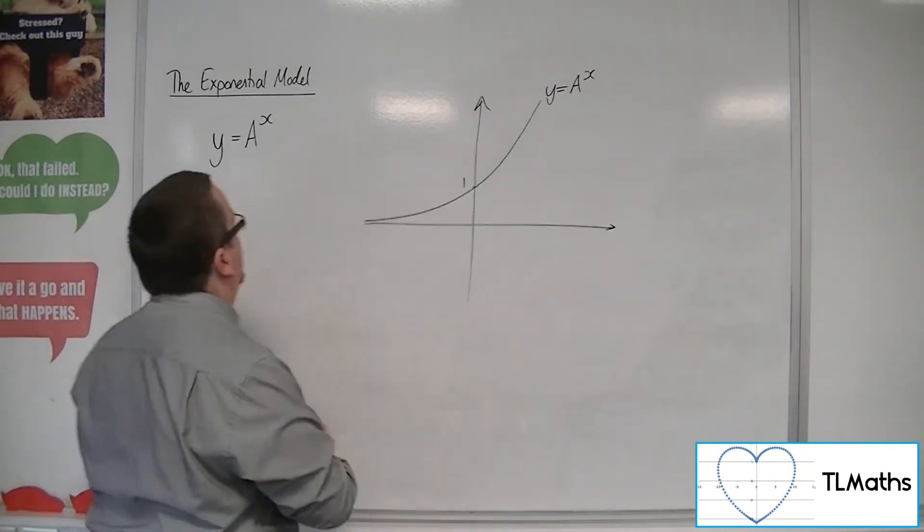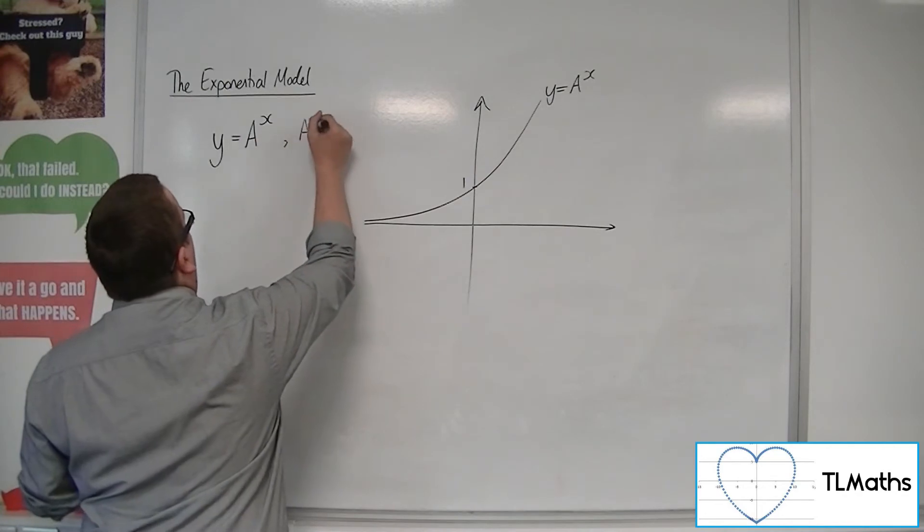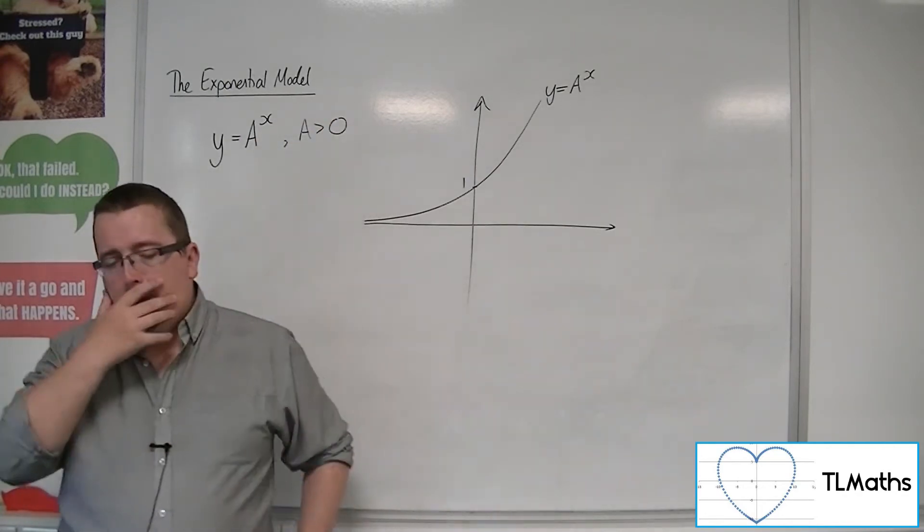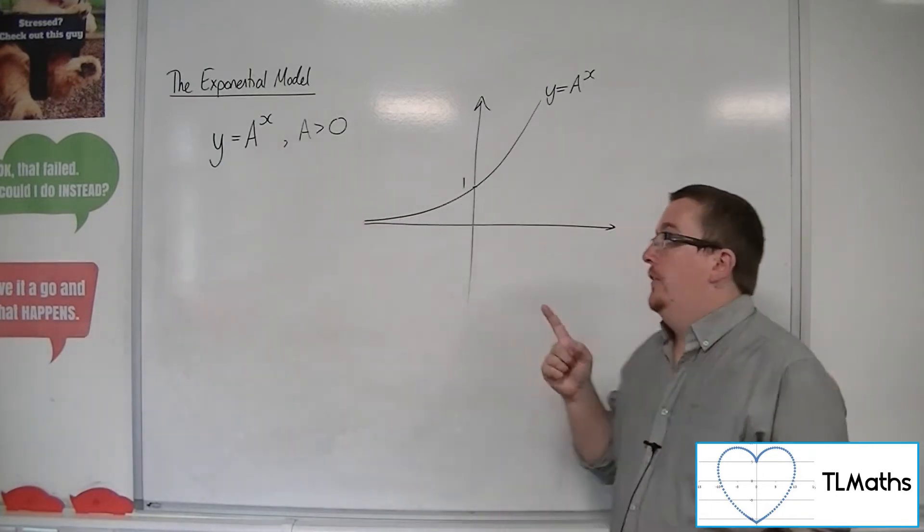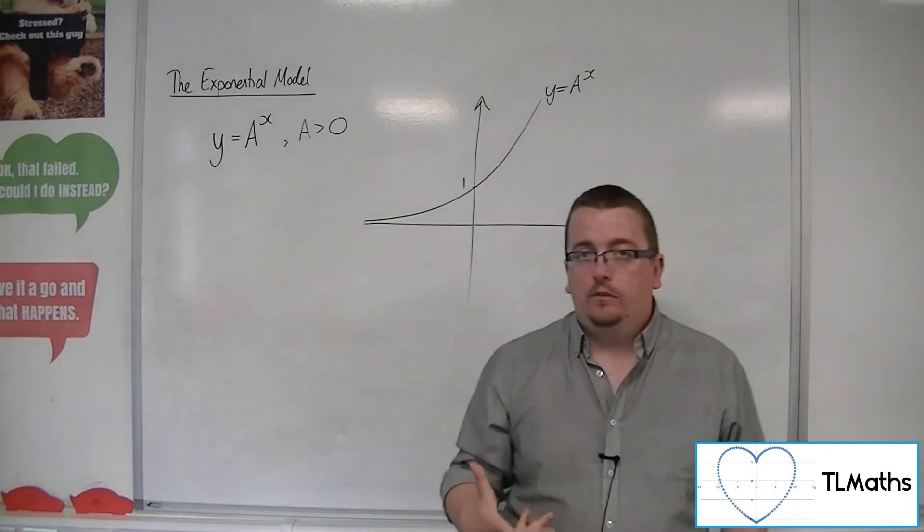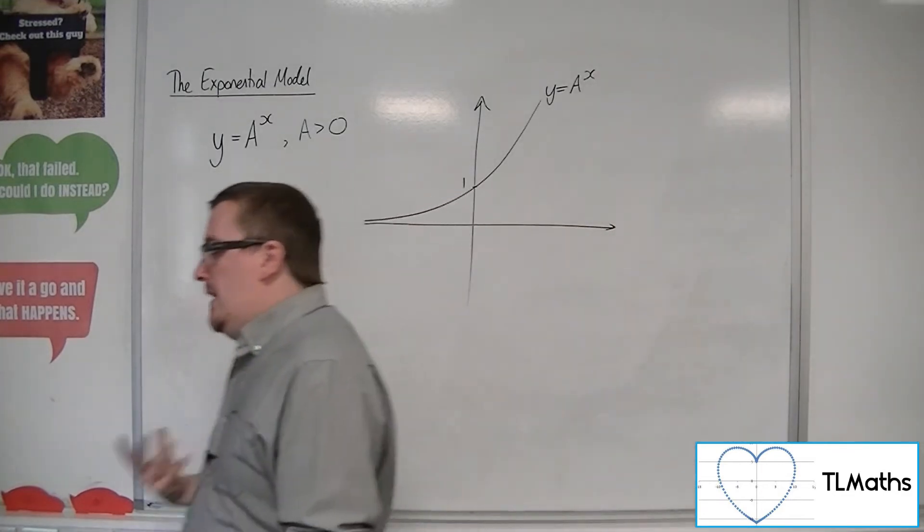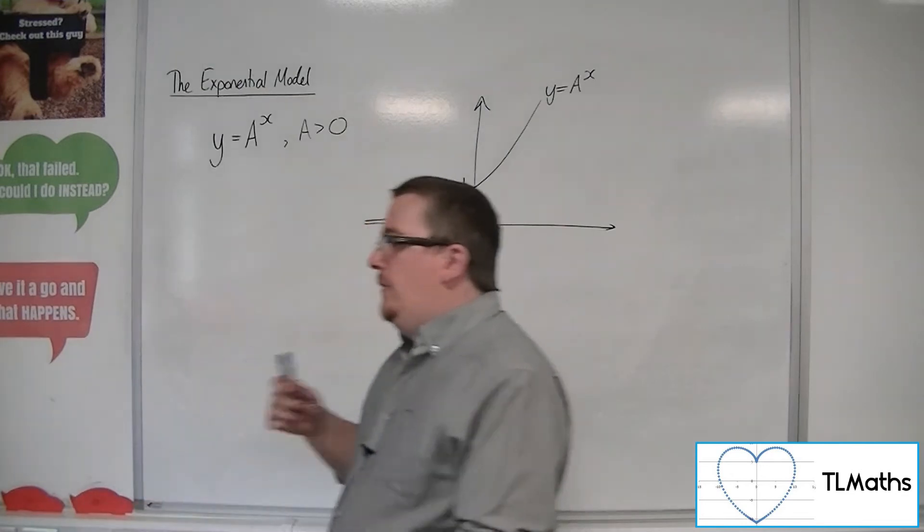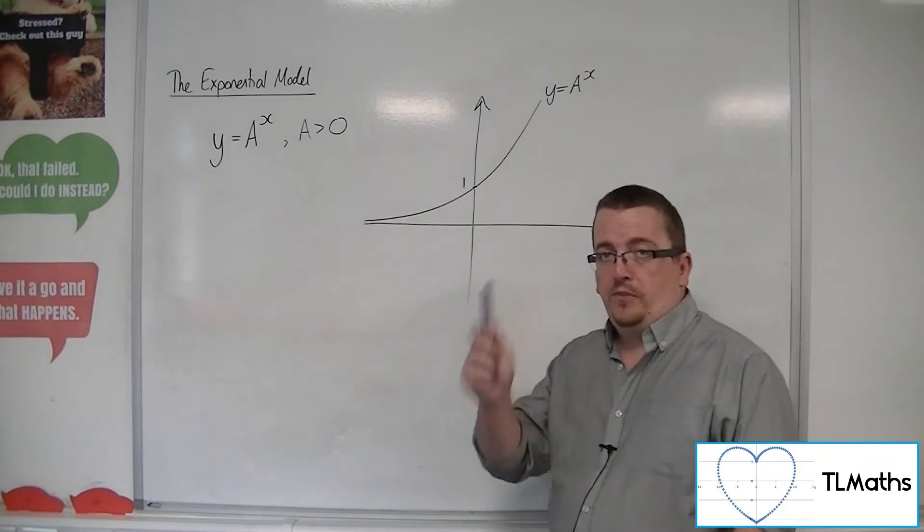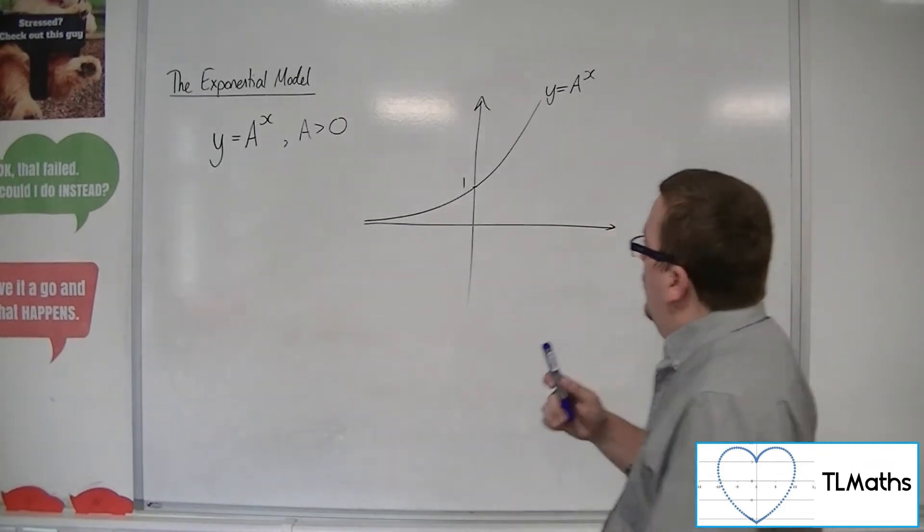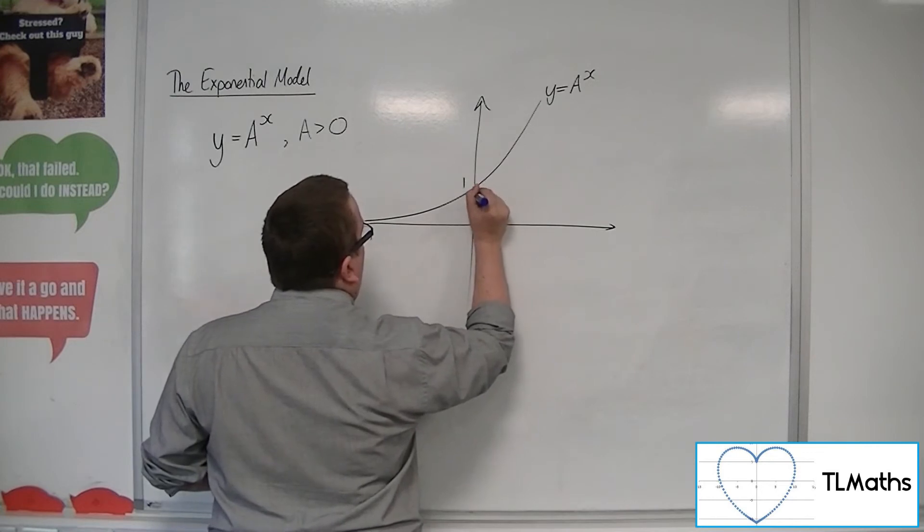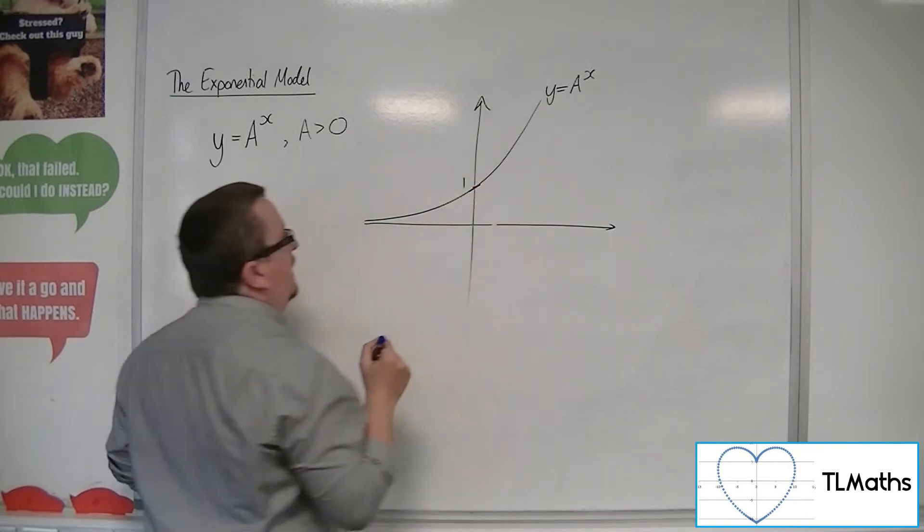A here I am taking to be a positive constant. So we know that the curve would look something like this. And what I would be saying is, is there a function, is there a function where, for a specific value of a, where the gradient of the curve at this point is equal to 1?